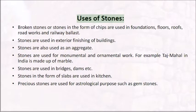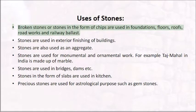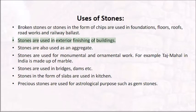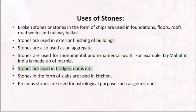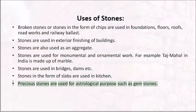Uses of stones: broken stones or stones in the form of chips are used in foundations, floors, roofs, road works, and railway ballast. Stones are used in exterior finishing of buildings. Stones are also used as an aggregate. Stones are used for monumental and ornamental work — for example, the Taj Mahal in India is made up of marble. Stones are used in bridges and dams. Stones in the form of slabs are used in kitchens. Precious stones are used for astrological purposes such as gemstones.